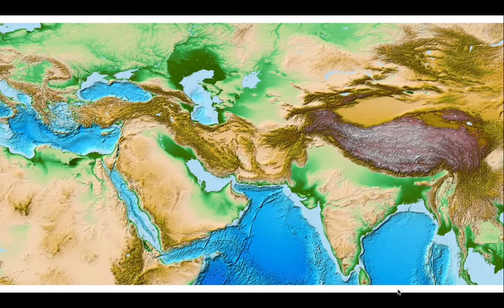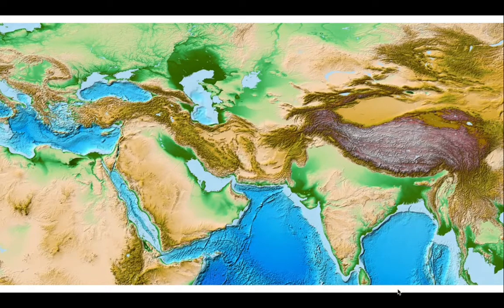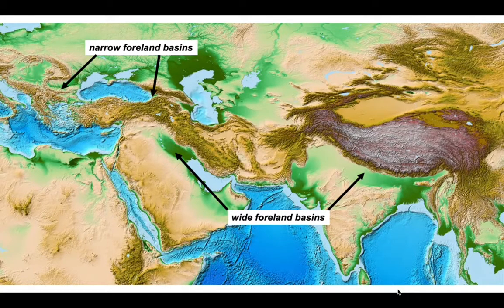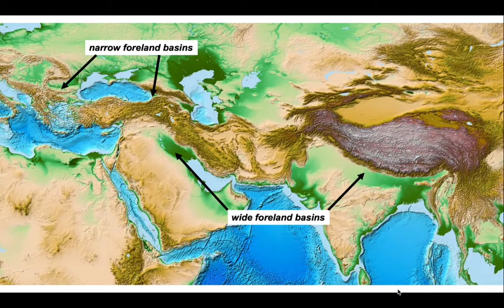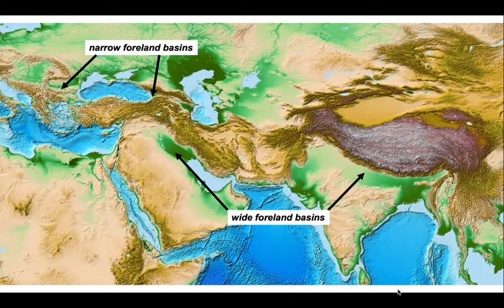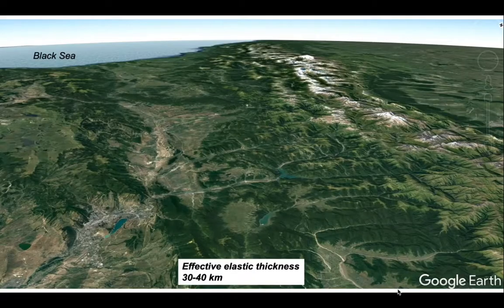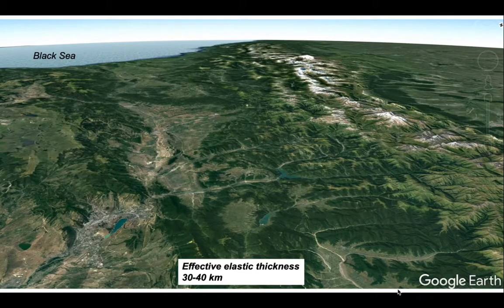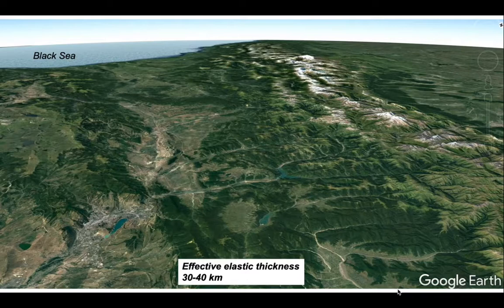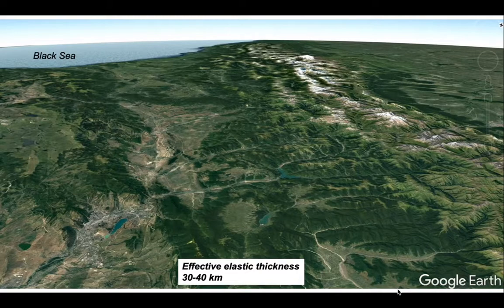Well, we can explore these concepts by looking at some examples from nature. There's some pretty wide foreland basins that we can see on the Indian continent and on the side of Arabia there. But in the northern part of the map, the foreland basins are rather narrow. Let's look at one of these narrow basins to start with here on the southern margin of the Caucasus Mountains.